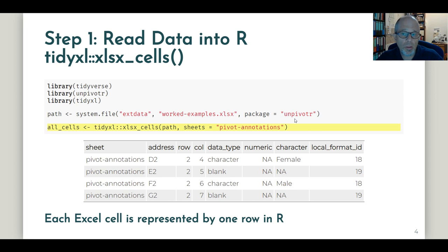The nice thing is that as soon as you have the unpivotr package installed, you have access to this Excel workbook that contains all these great examples that are so well documented in Duncan Garmonsway's book. So we're reading in the data. We have this path to a system file, so we don't need to download it from any website.